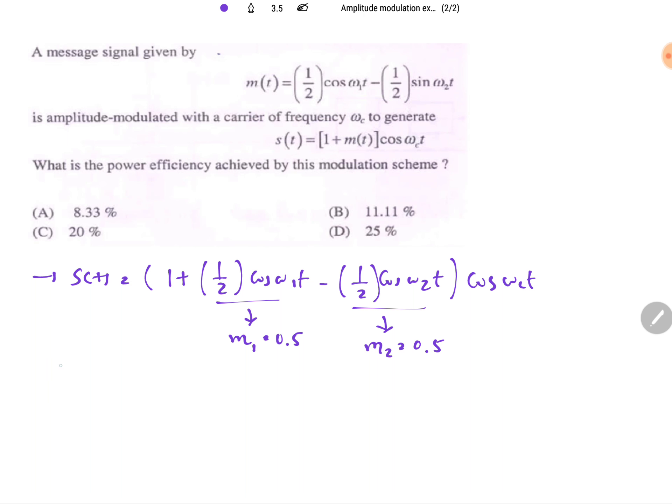From that we can calculate resultant modulating index m equals square root of m₁ square plus m₂ square. So you will be finding it will be half square plus half square, so that is 1 by root 2.